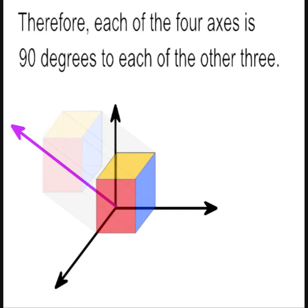Therefore, each of the four axes is 90 degrees to each of the other three.